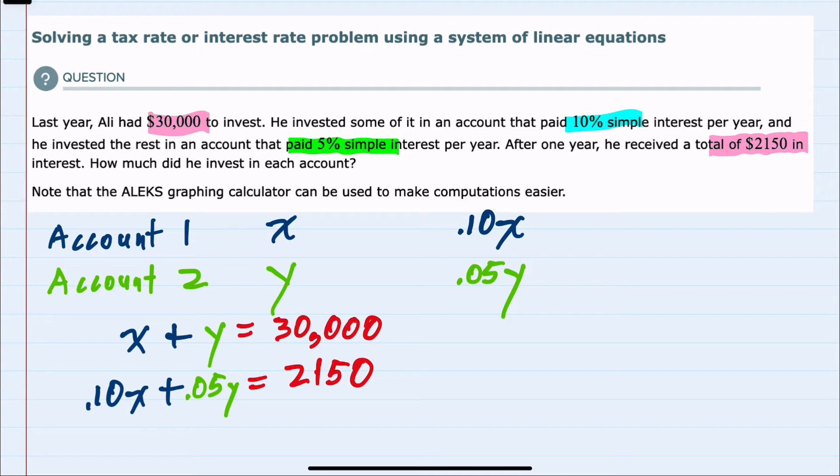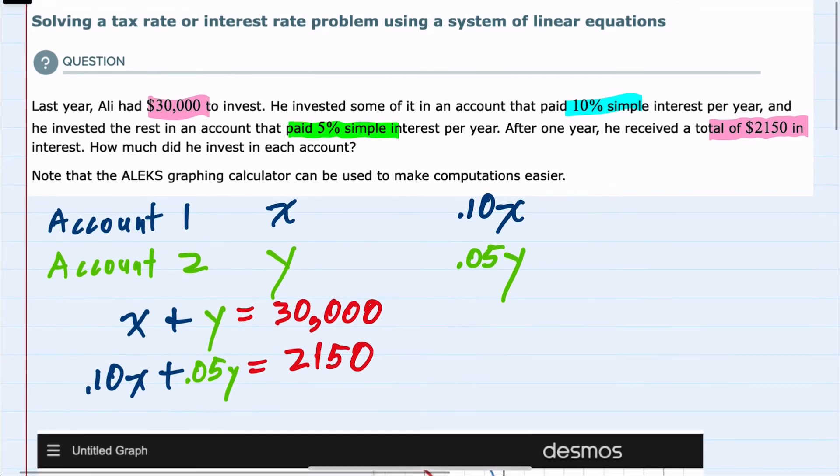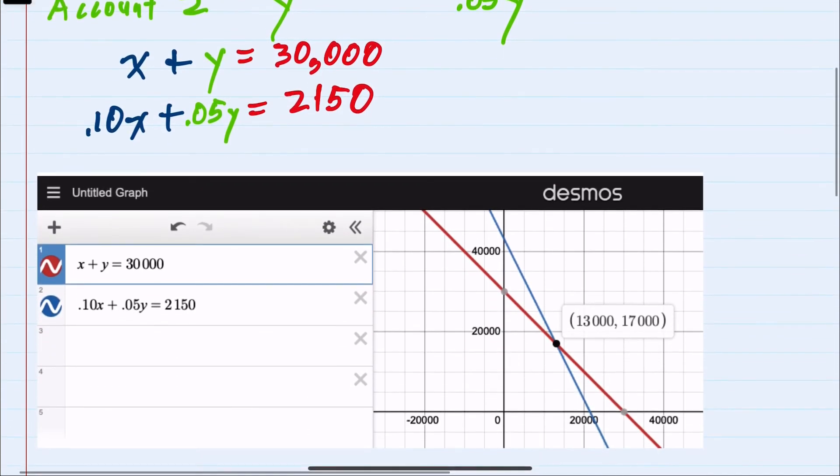So from the investment amounts, we knew the total was $30,000. That gave us one equation. From the interest, we knew that the total was $2,150. That gave us a second equation. And since we were told we should use a graphing calculator to make the calculations easier, I plugged each of these into Desmos.